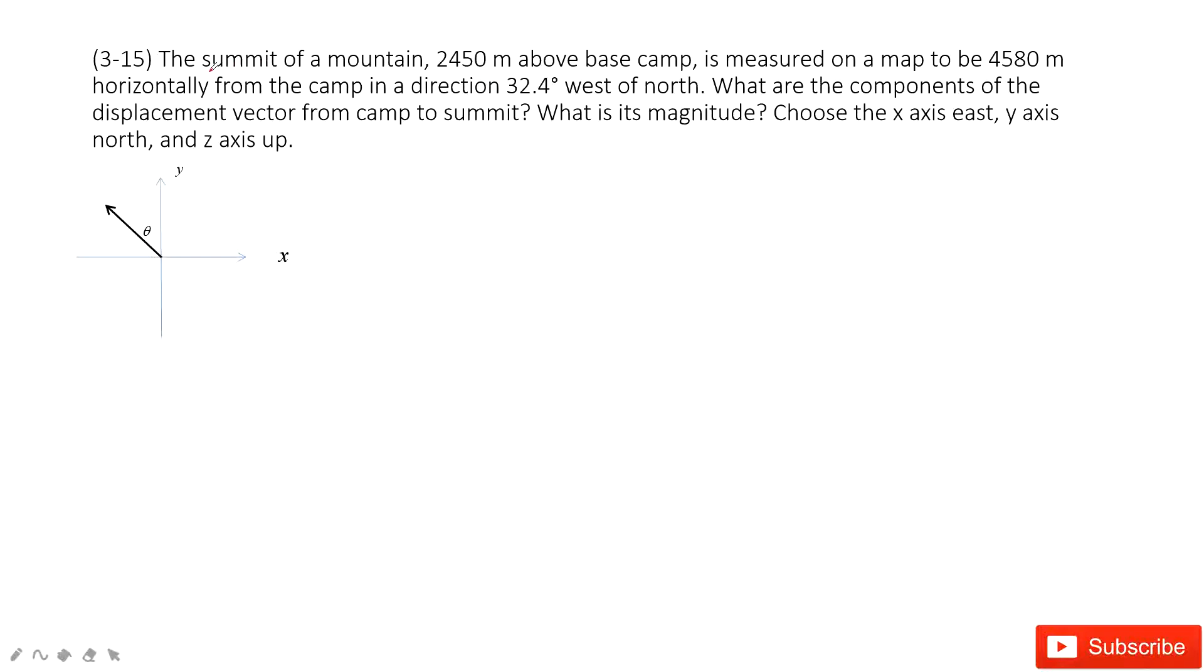They tell us there is a mountain, 2450 meters above the ground. And then we measure it on a map to be 4580 meters horizontal from the camp in the direction of 32.4 degrees west of north. In this one, I suggest you draw a picture to understand what happens.